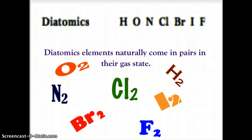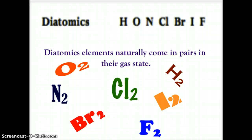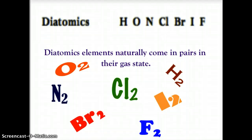Directly above the orange and yellow section of the periodic table there is a list of seven elements called the diatomics. This is one of the areas where students make the most common simple mistakes. These elements, when in their natural gaseous state and by themselves, will always come as a diatomic pair — di meaning two — so two atoms in every molecule. Each of these is a gas in its natural state.